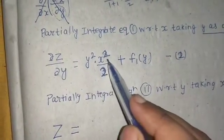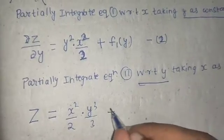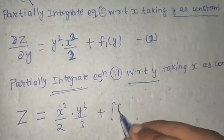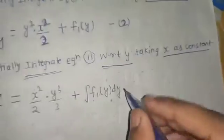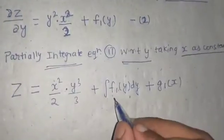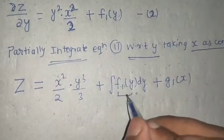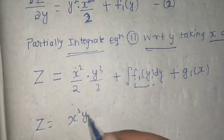Z equals: the term was X squared Y squared by 2, and now integrating with respect to Y, X squared by 2 comes out and integration of Y squared gives Y cubed by 3. This term is a function of Y, so integrating with respect to Y gives the integral of F1(Y) dY. The constant of integration from this step, since X is treated as constant, will be a function of X only — let's write this as G1(X). We don't know the value of F1, but we know this integration will come out to be a function of Y only.